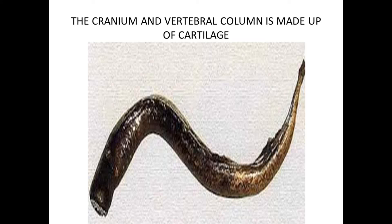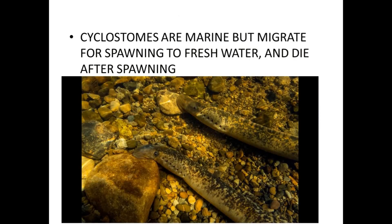The cranium and the vertebral column are made up of cartilage. The cranium is the covering of the brain. Cyclostomes are marine but migrate to fresh water for spawning — spawning means laying eggs. They migrate to lay eggs in fresh water and die after spawning. That is their feature.